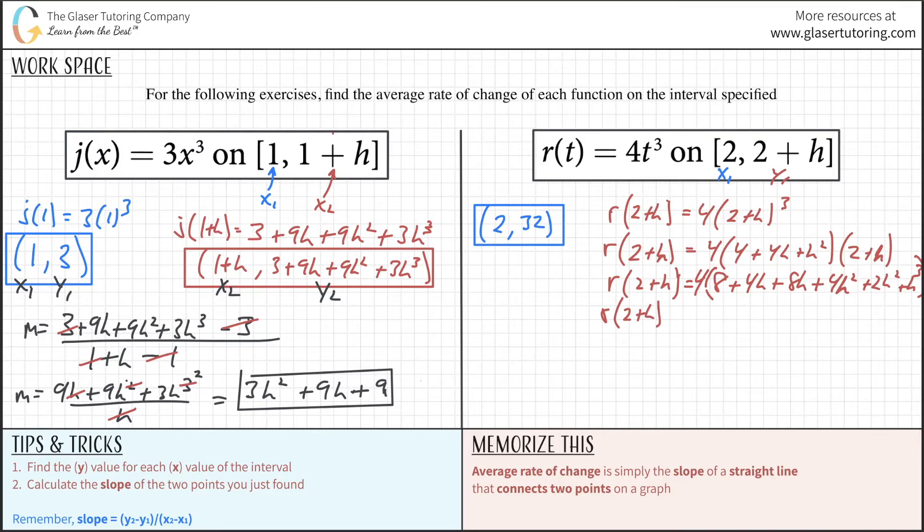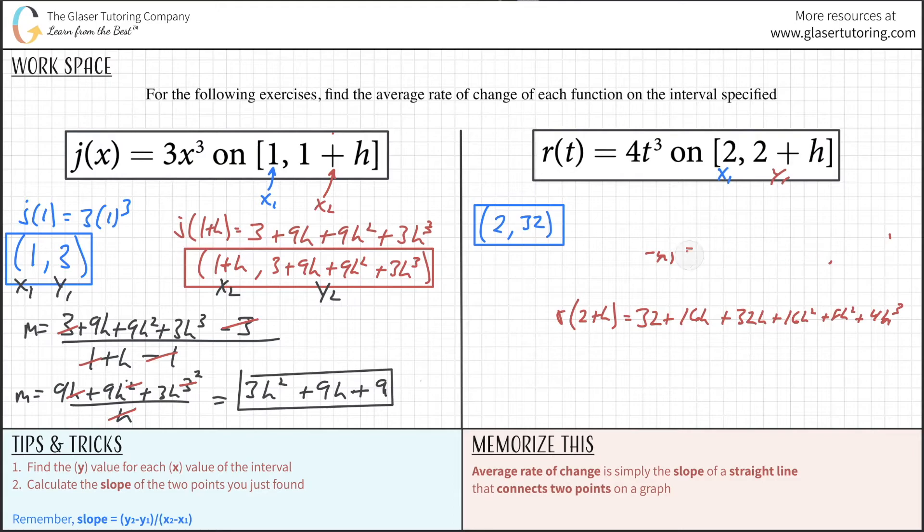Don't forget there's still a 4 out here, so we multiply everything by 4. So r of 2 plus h equals 32 plus 32h plus 16h plus 32h, plus 16h squared plus 8h squared, plus 4h cubed. This is now my y value.